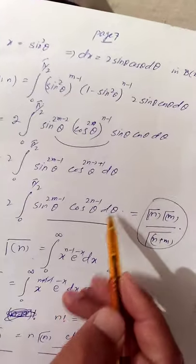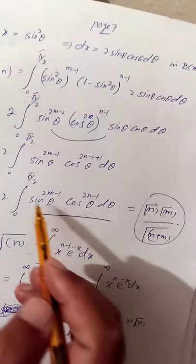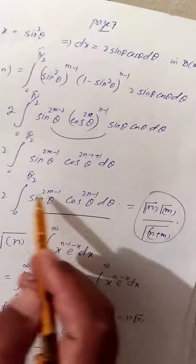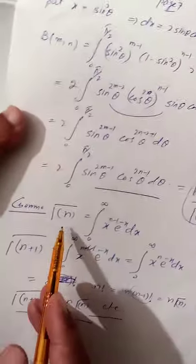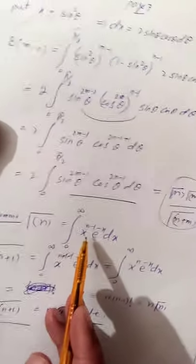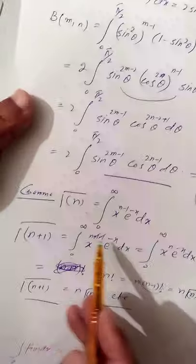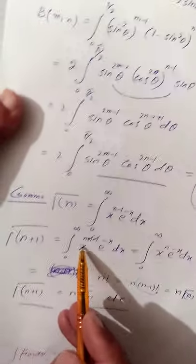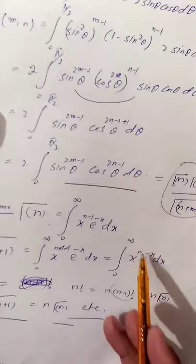This integral can be written in terms of the Gamma function as Γ(m)Γ(n)/Γ(m+n). Recall that the Gamma function is defined as Γ(n) = ∫₀^∞ x^(n−1) e^(−x) dx. Replacing n by n+1 gives Γ(n+1) = ∫₀^∞ x^n e^(−x) dx.